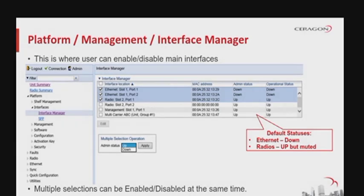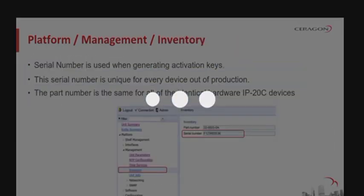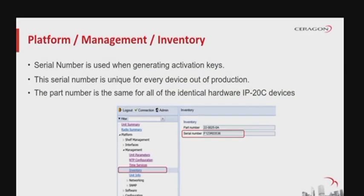The interface manager, found under Platform > Management > Interface Manager, is the place where the user can enable or disable various interfaces of the network element. For example, this machine has two radio interfaces and two Ethernet ports available to configure. By default, the Ethernet interfaces are down and the radios are up but muted — that is, not transmitting. Each machine has its own unique serial number, which can be used for generating activation keys from Serragon's license management system.